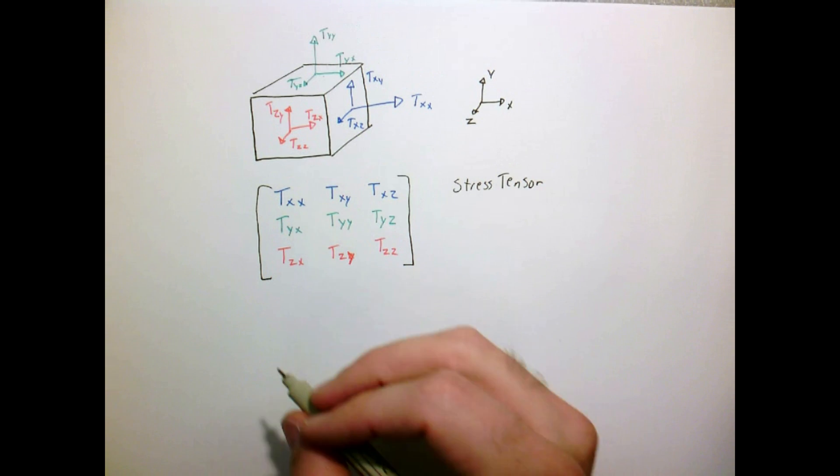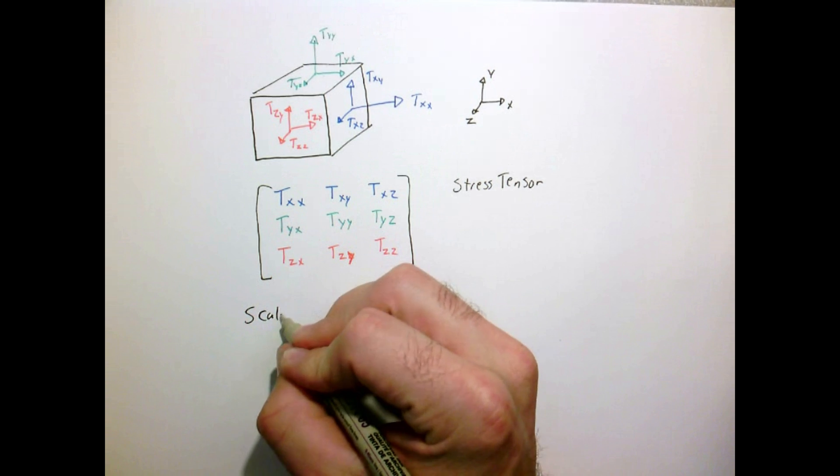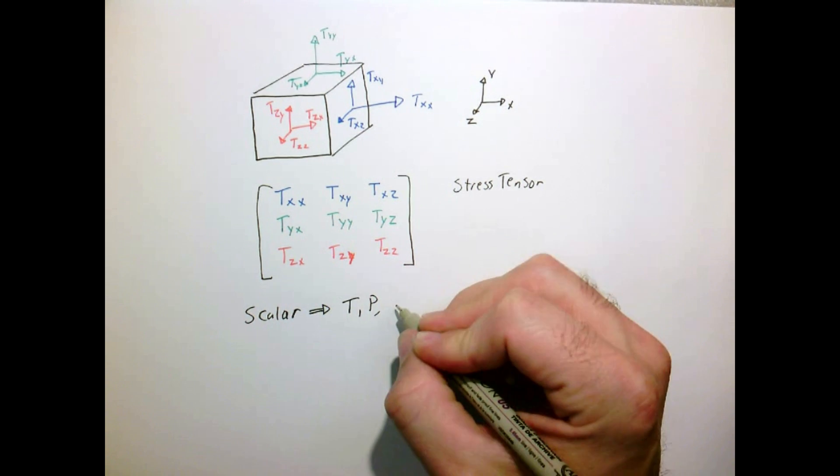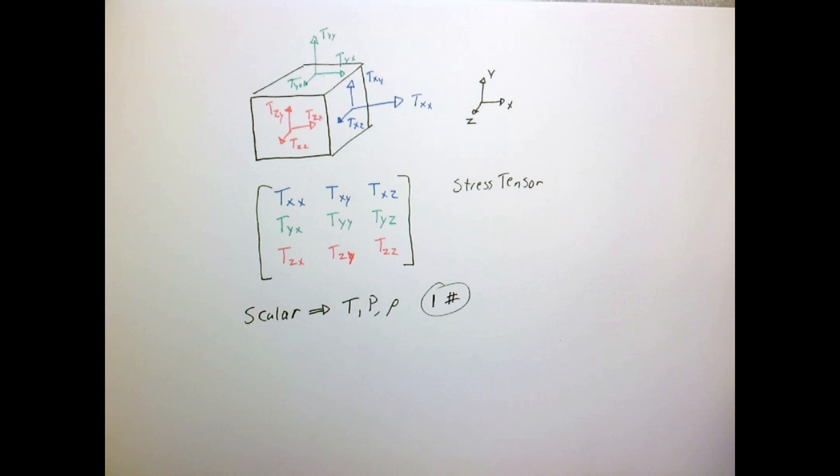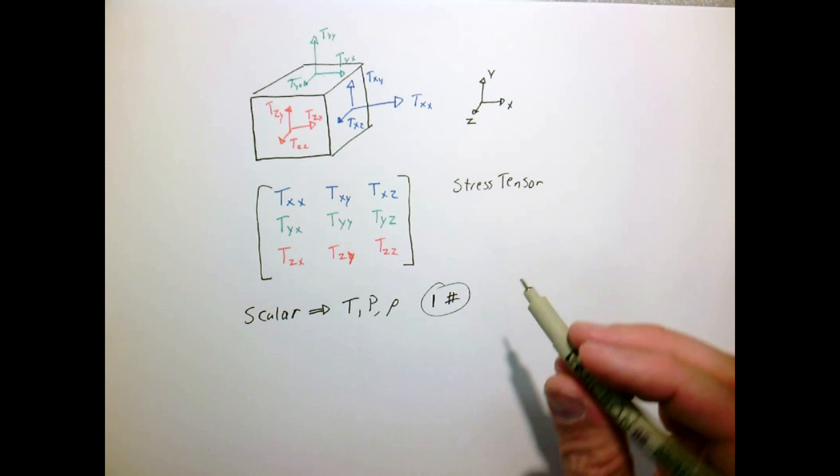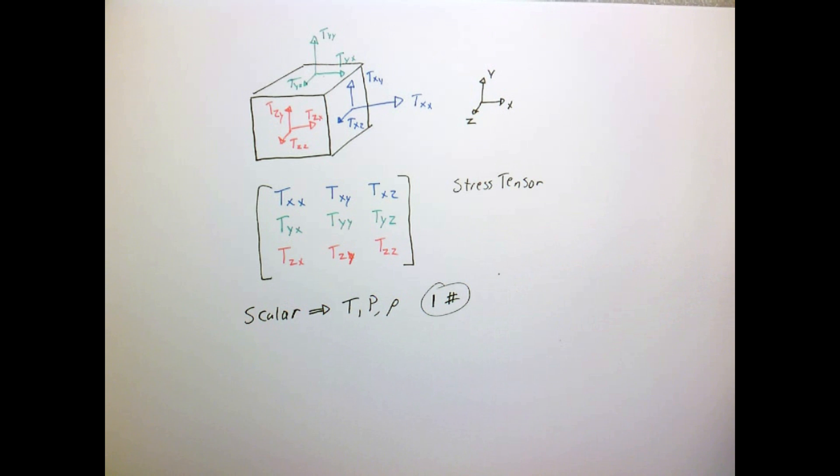So we've seen before we had scalar quantities, things like temperature, pressure, density. These are just a single number, one number. So these can change with time and space, but at a particular point, at a particular time, it's just a number.